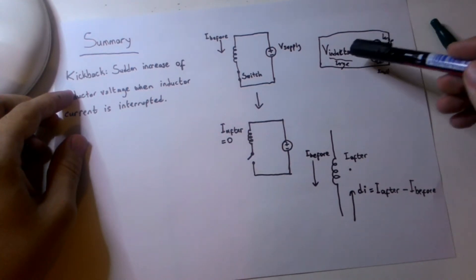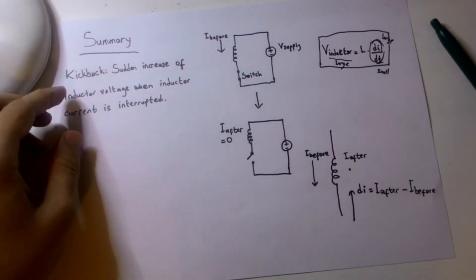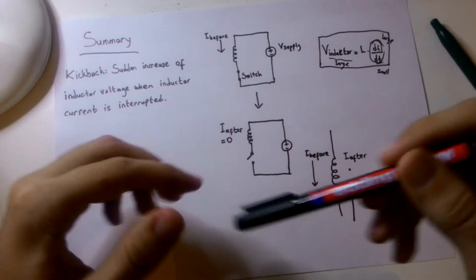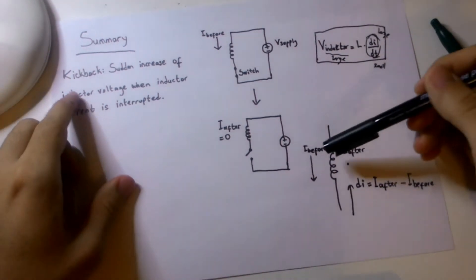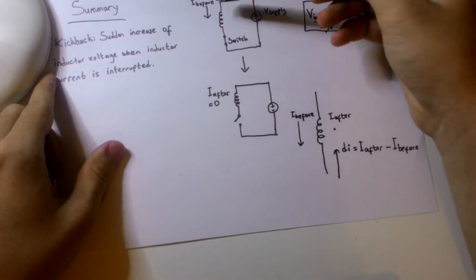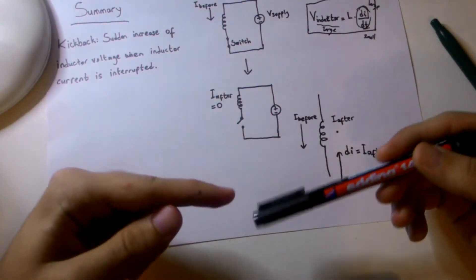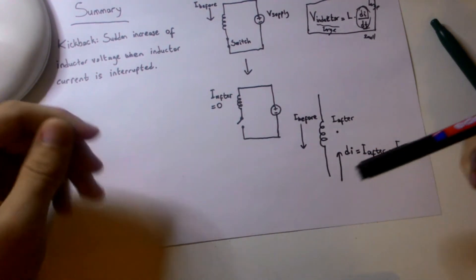And the polarity of this induced voltage can be found by this: the initial current was flowing in this way, but since the change of current is negative, the difference in current can be shown in this way, in the negative direction of the original current.